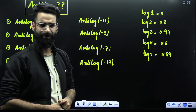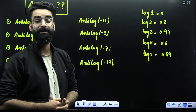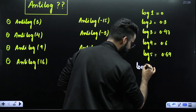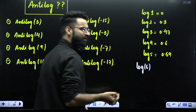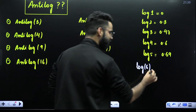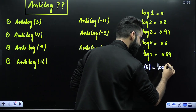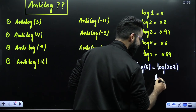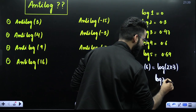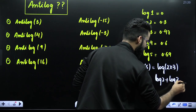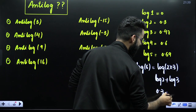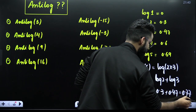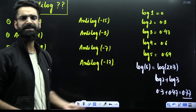Now you must be thinking why I have not written log 6 — because you should know that to calculate log of 6, you need not remember its value. Log of 6 means log of 2 × 3. Log of M × N is nothing but log M plus log N, so log 2 is 0.3 and log 3 is 0.47, giving 0.77. That is the log 6 value.